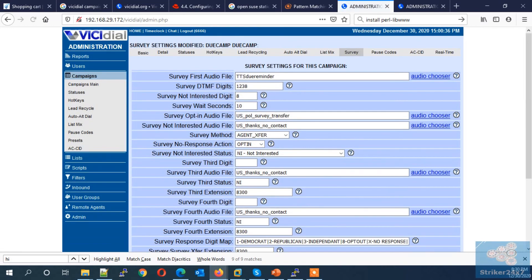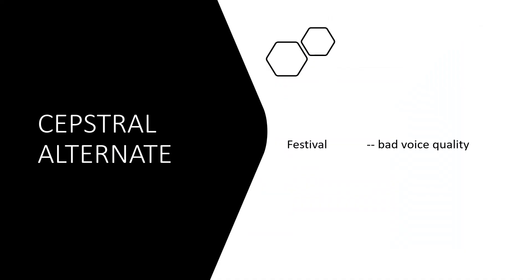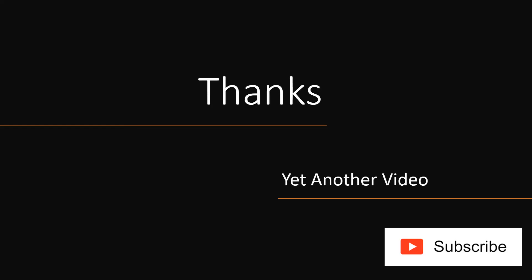Now upload your leads with the respective fields and start the campaign to broadcast voice. As a Kaptrel alternative you can use Festival, but Festival voice quality is not good. You can also use Google TTS — Google voice quality is good and supports many languages. We will soon post the Google TTS integration video as well. Thanks for watching, catch you in another video.